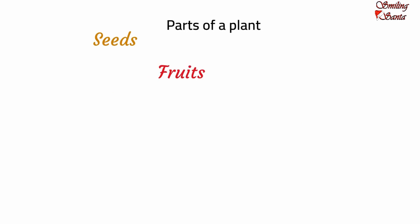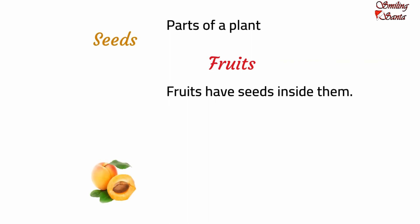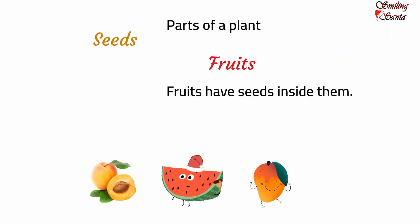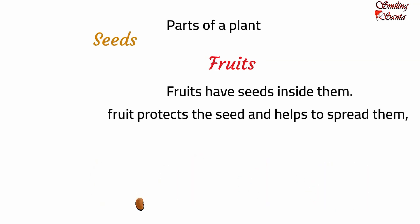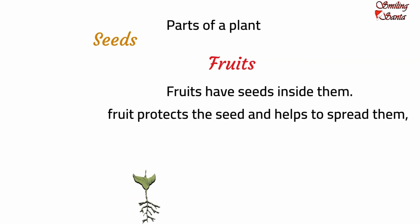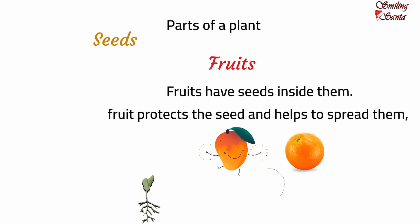Different plants have different types of fruits. Fruits come in different shapes and sizes. Fruits have seeds inside them — some fruits have a single seed while some have many seeds. Some plants have big seeds while some have small seeds. Fruits protect the seeds and help to spread them. The main function of a fruit is to spread the seeds and help the plant to reproduce. Animals transport and discard seeds when they eat fruits. Examples of fruits we eat are mango, orange, apple and strawberry.